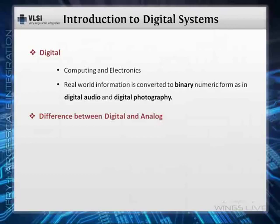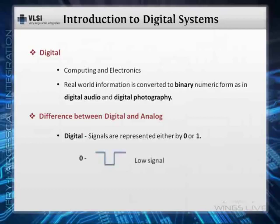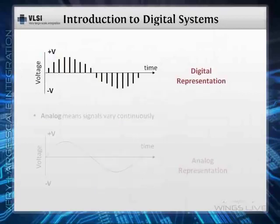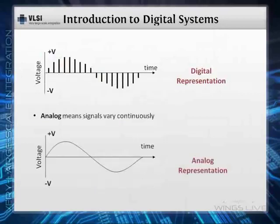Let's see the difference between digital and analog. Digital means signals are represented either by zero or one — zero means low signal and one means high signal — whereas analog means that signals vary continuously.